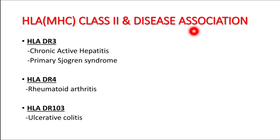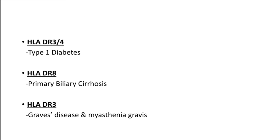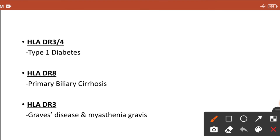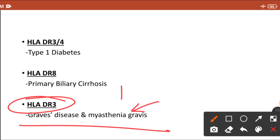Examples of MHC class 2 molecule associated diseases — the encoded genes are HLA-DP, DQ, and DR: HLA-DR3 is associated with chronic active hepatitis and primary Sjögren syndrome. HLA-DR4 is associated with rheumatoid arthritis. HLA-DR103 is associated with ulcerative colitis. HLA-DR3 is also associated with type 1 diabetes. HLA-DR8 is associated with primary biliary cirrhosis. HLA-DR3 is additionally linked to Graves' disease and myasthenia gravis, which is an example of type 5 hypersensitivity reaction.